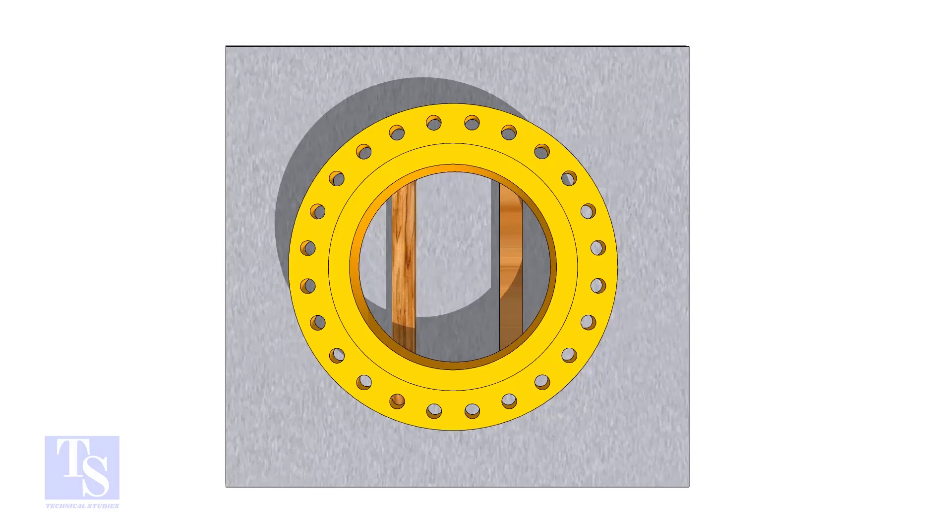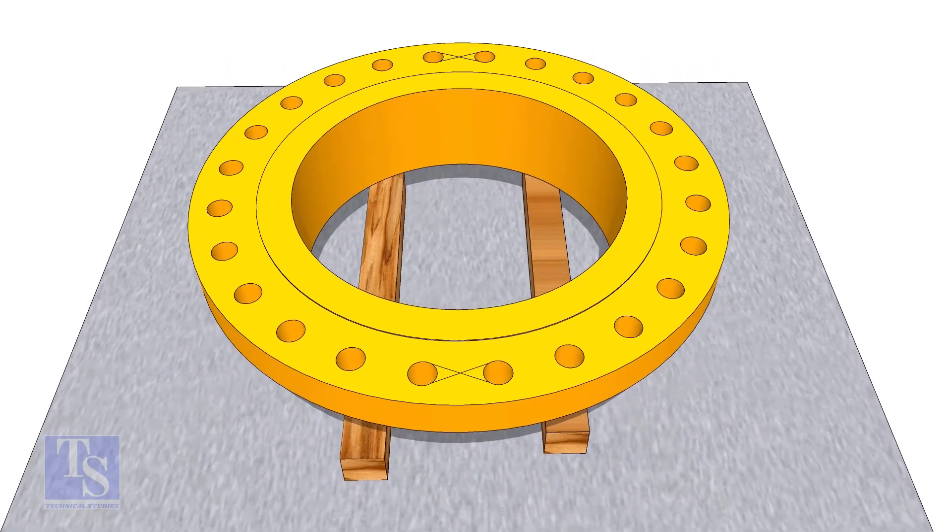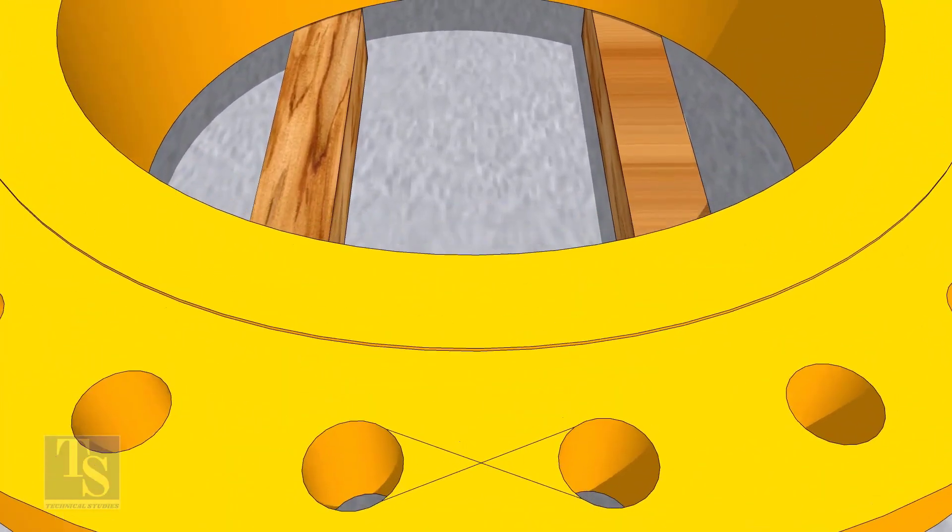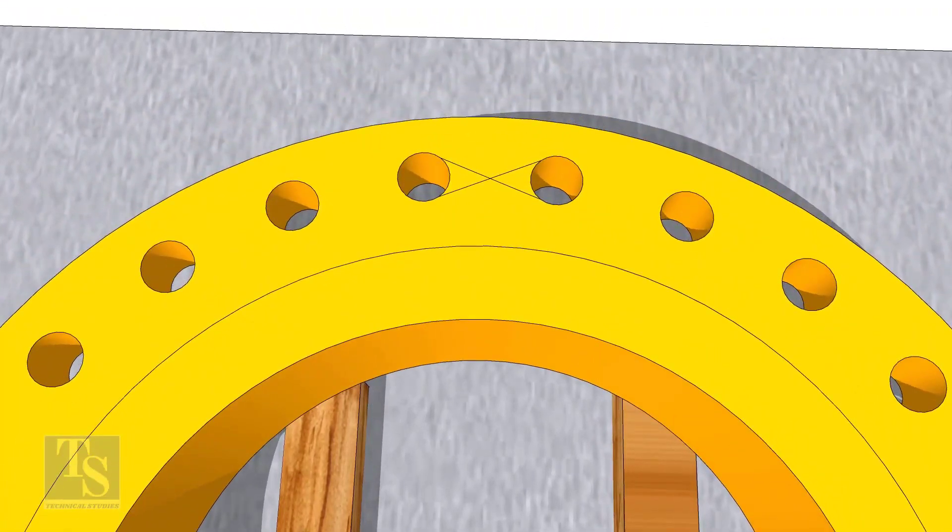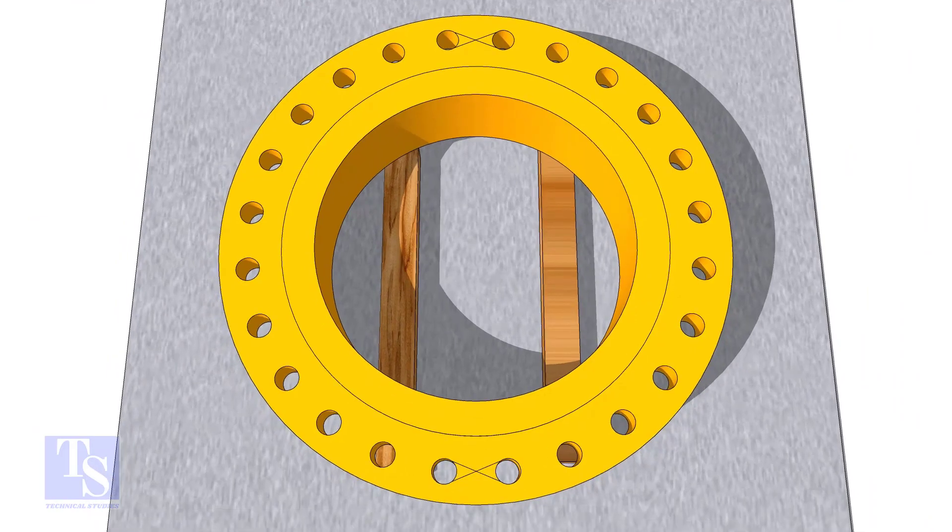In the second method, you need to mark the center line of the flange. Draw tangential lines on two adjacent holes on opposite sides. Draw a line as shown.